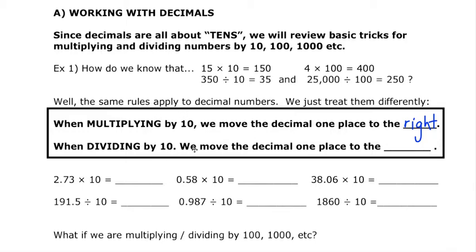When we're dividing by 10, that imaginary decimal place at the end of, say, 350, gets moved one spot to the left — so 350 becomes 35. When dividing by 10, we move the decimal place one place to the left. Dividing by 100 or 1000, we move it two spots, three spots, and so on. Let's take a look at some more concrete examples so we can see what's happening here.